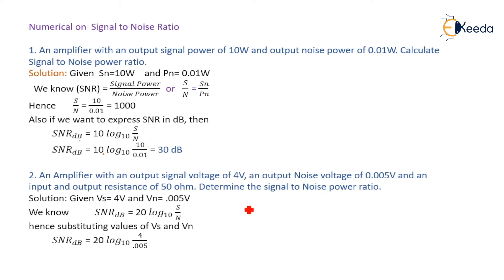So we know signal to noise ratio in terms of voltage. Signal to noise ratio in dB equal to 20 log to the base 10 of Vs divided by Vn. Recalling the formula from the previous study.